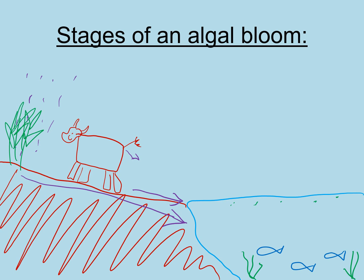These nitrates are used by plants to grow, and the fastest thing to grow is algae. So the algae starts to grow rapidly, there's too much algae, and it blocks out the light. The surface of the lake becomes completely covered by algae, with no light getting to the bottom because the algae is taking all the sunlight for photosynthesis.